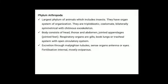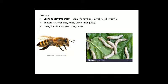Phylum Arthropoda: the largest phylum of animals, which includes insects. They have organ system level of organization, are triploblastic, coelomate, bilaterally symmetrical with a chitinous exoskeleton. Body consists of head, thorax and abdomen with jointed appendages. Respiratory organs are gills, book lungs or tracheal system with open circulatory system. Excretion occurs through Malpighian tubules. Sense organs include antennae and eyes. Fertilization is internal; mostly oviparous. Economically important organisms include honeybee and silkworm. Vectors include Aedes, Culex and Anopheles mosquito. Living fossil is Limulus (king crab).